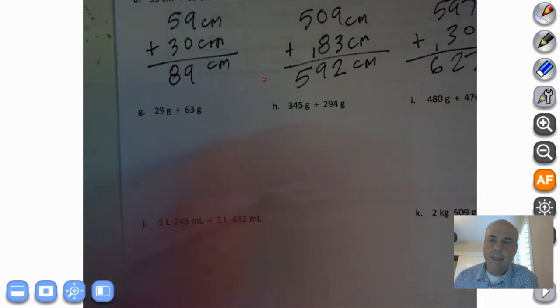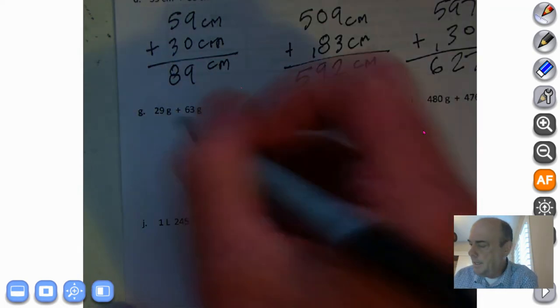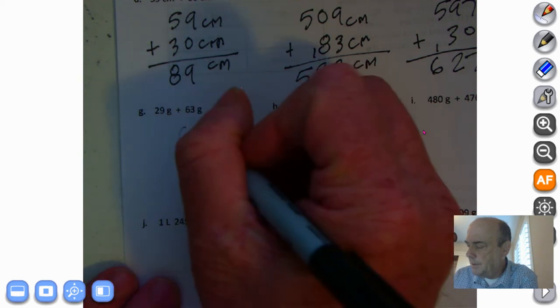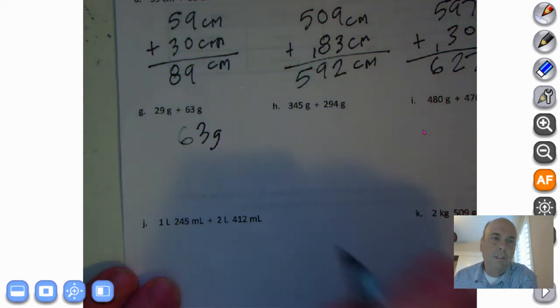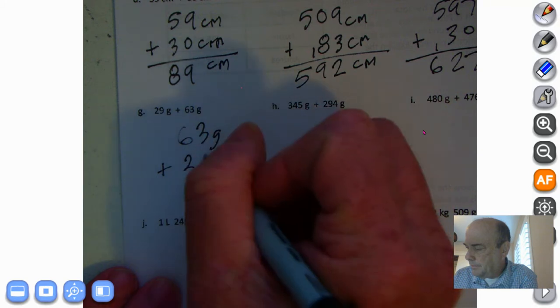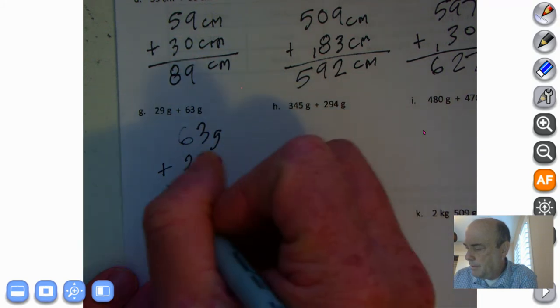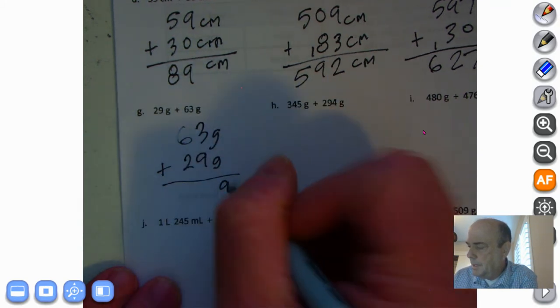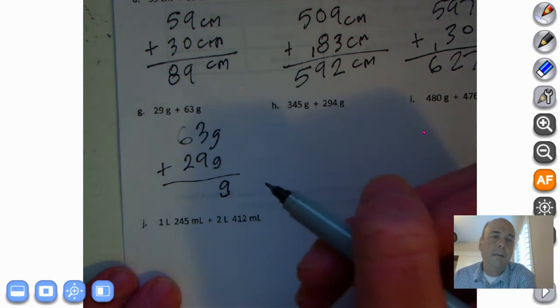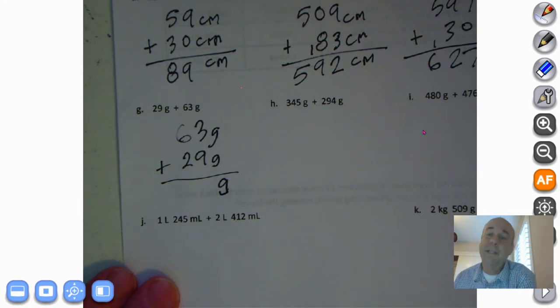Let's get started with G and we're going to do 63 plus 29 grams, 63 grams plus 29 grams. We're going to bring down the grams, three grams plus nine grams. Go ahead and pause this, do it on your own, that's the way you'll learn.